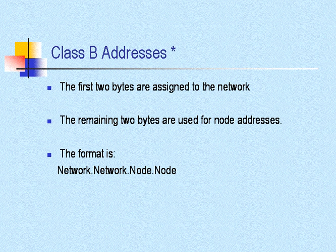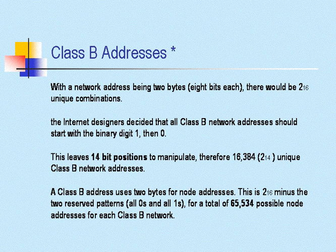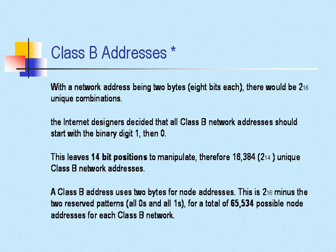For a Class B address, the first two bytes are assigned to the network, and the remaining two bytes are used for node addressing — so the format is: network, network, node, node. With two bytes and 16 bits, all Class B network addresses start with binary 1, 0, leaving 14 bit positions to manipulate. Therefore, there are 2 to the 14th power, or 16,384 unique Class B network addresses. For node addressing, Class B uses two bytes — 2 to the 16th minus the two reserved patterns equals 65,534 possible node addresses for a Class B network.